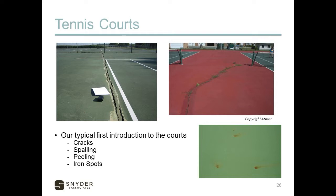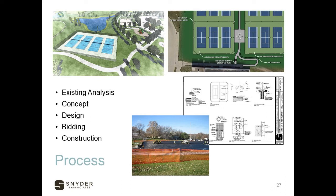We've been through these and seen these — there's all kinds of different scenarios that happen to tennis courts. So what we're doing is following a process. When we get those first initial phone calls, we start looking at the existing analysis of what these courts are doing and start planning what we can do to help, whether it's a brand new set of courts, rehabbing an existing set, or updating some portion. We'll start working with you on concepts, pulling together designs, and moving forward with bidding and construction.